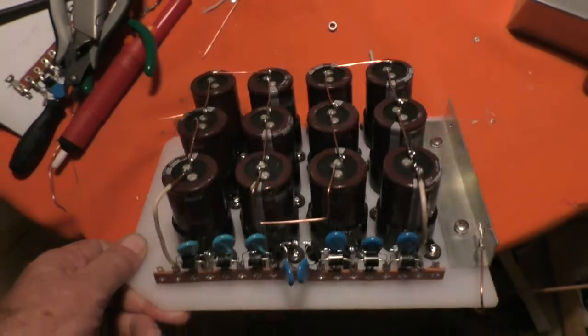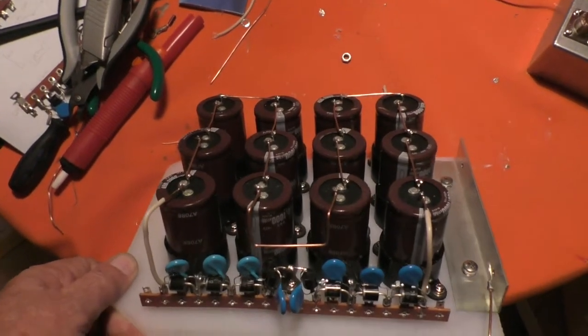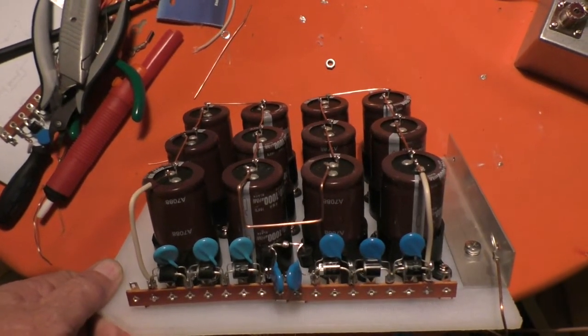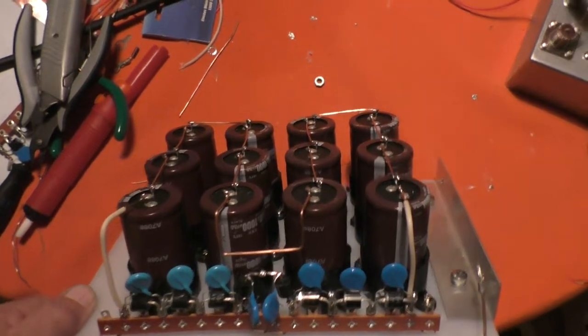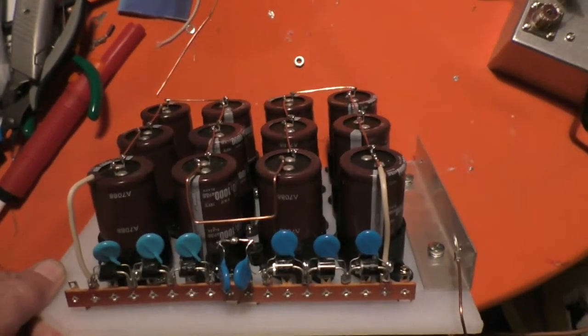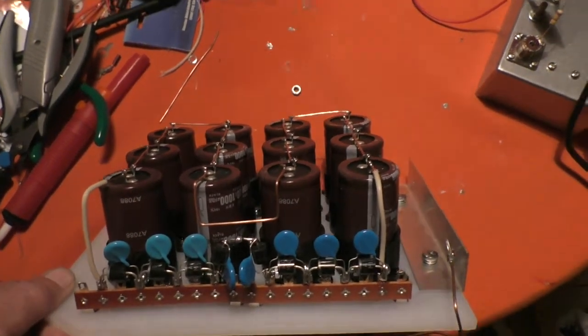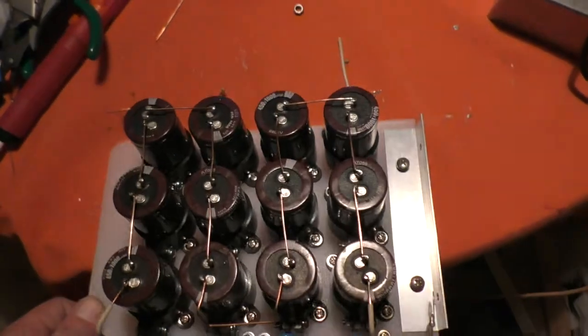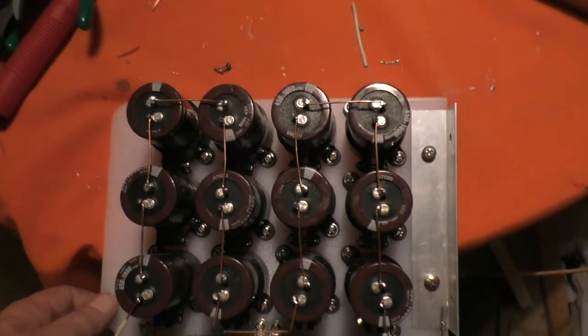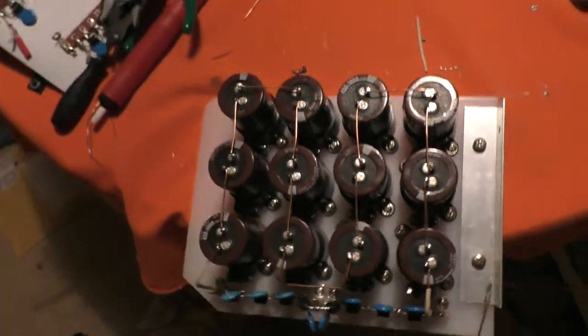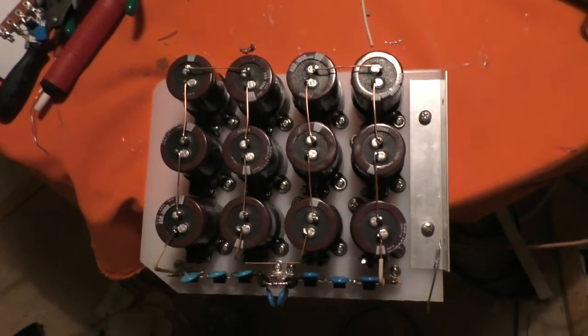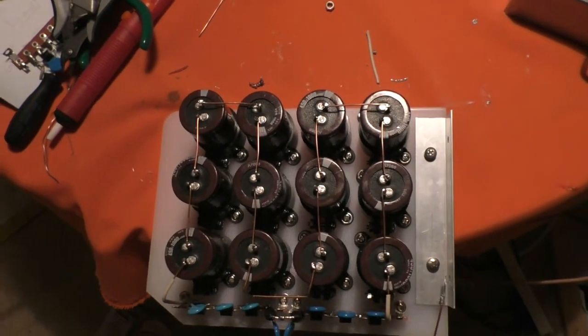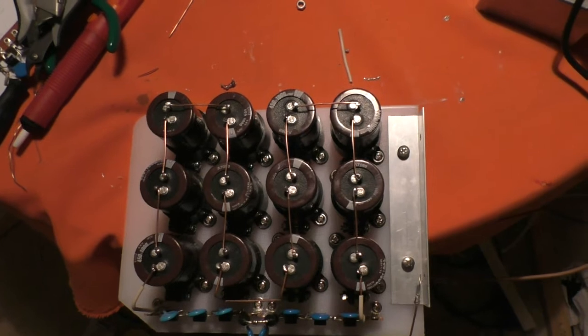Now if you watched the video before last, you would have seen that the amplifier produced about 800 watts. The HT voltage sank down from about 2800 down to about 2500 volts.